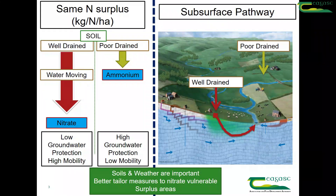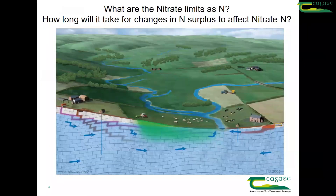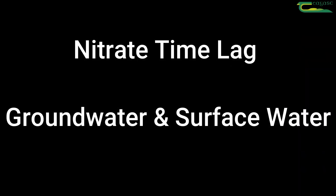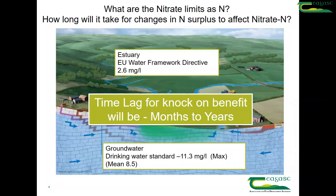We need to better tailor measures to our nitrate vulnerable and nitrate surplus areas. How long will it take for that nitrate to travel from the soil through the leaching pathway to groundwater and to surface water? In freely drained areas it can take months to years, but as we move towards moderate drainage, it can take up to decades.